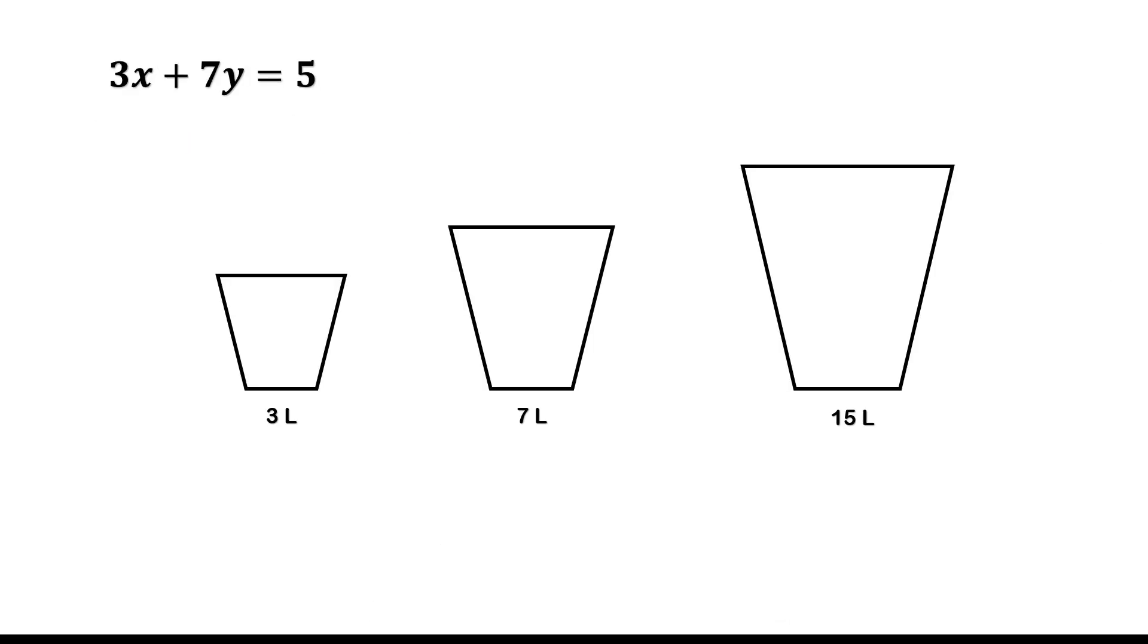In plain English, this equation asks, how many times should we use the 3-liter bucket, and how many times should we use the 7-liter bucket to end up with exactly 5 liters? Because we can't half-fill buckets, both x and y have to be integers. In our first solution, we used the 3-liter bucket four times. So x equals 4. And we removed 7 liters once. So y equals negative 1. That combination gets us to 5 liters.